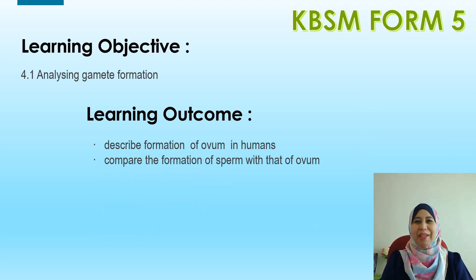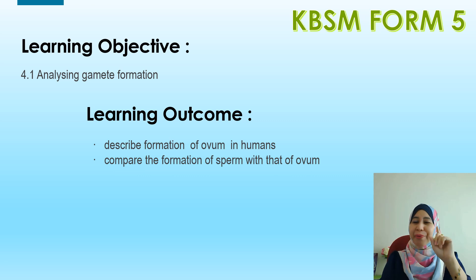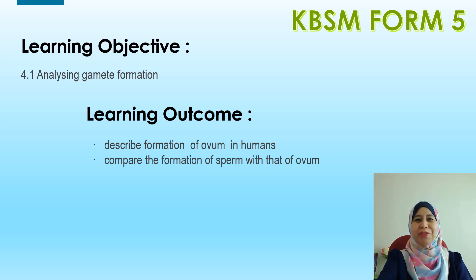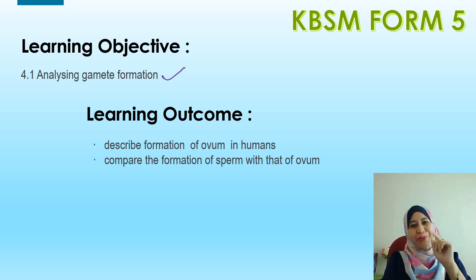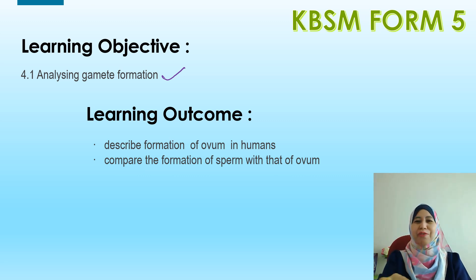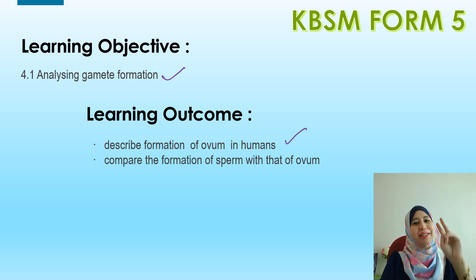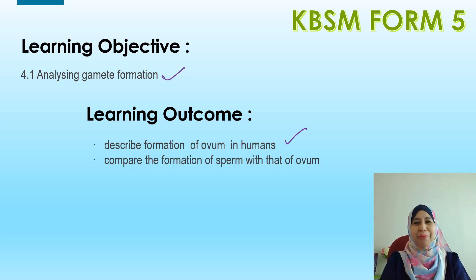For KBSM Form 5, the learning objective is 4.1, Analyzing Gamet Formation. The learning outcomes are: first, describe the formation of ovum in humans; second, compare the formation of sperm with ovum.